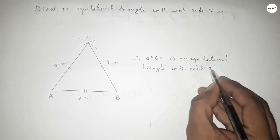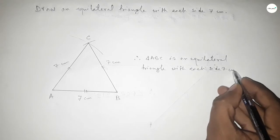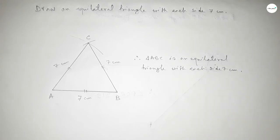This is the process to draw an equilateral triangle with each side 7 centimeters. That's all, thanks for watching. If this video is helpful to you, please share it with your friend.